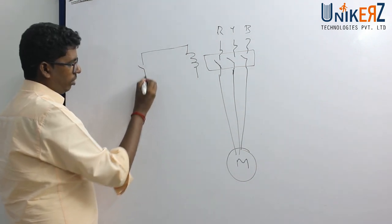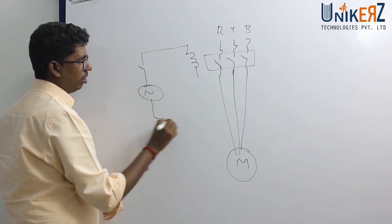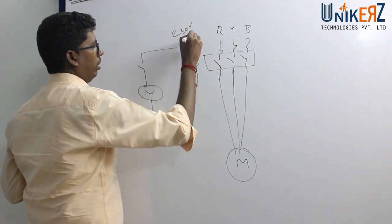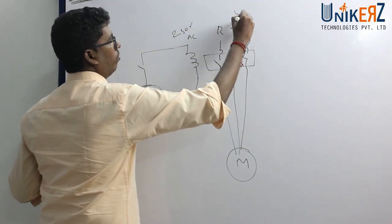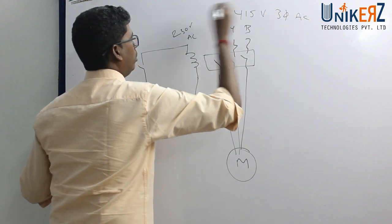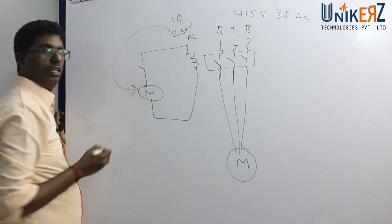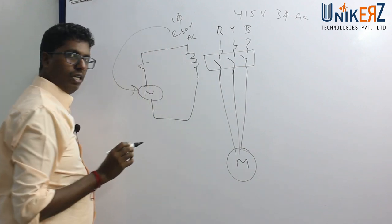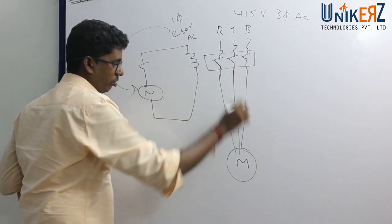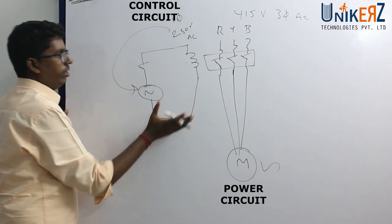Let's have a selector switch. The motor is 230V AC. This is 415V AC. This is a single motor. This is the power wiring. This is the control wiring.